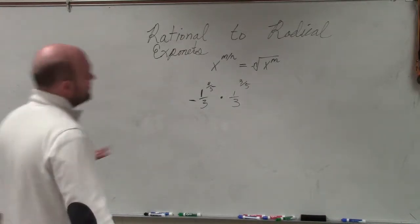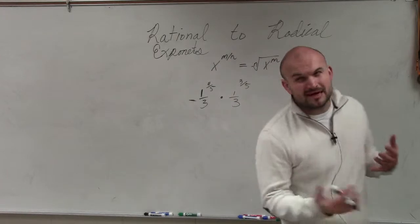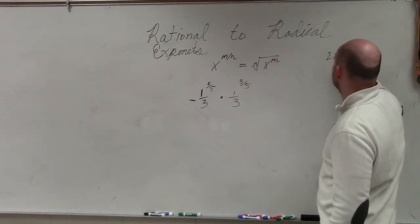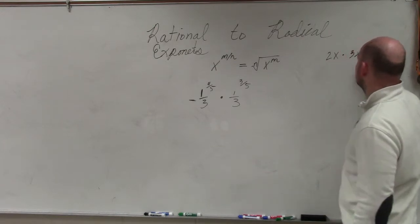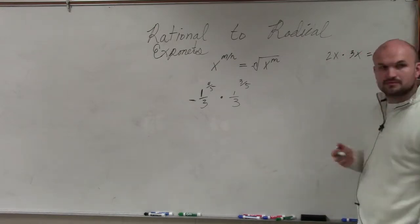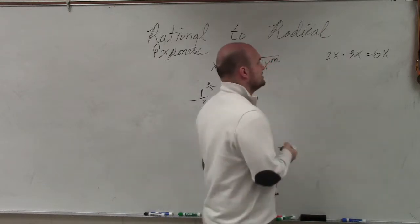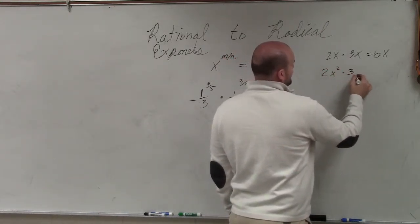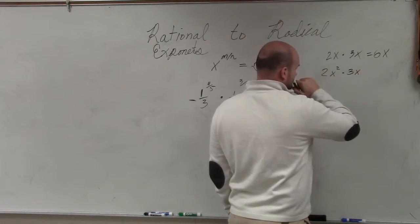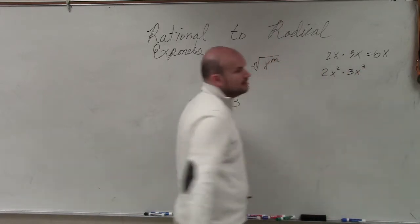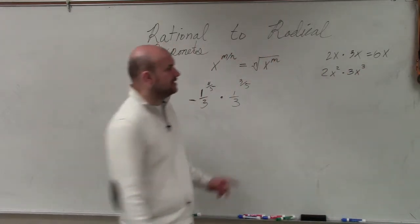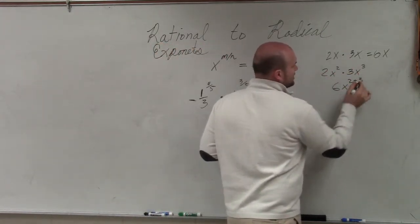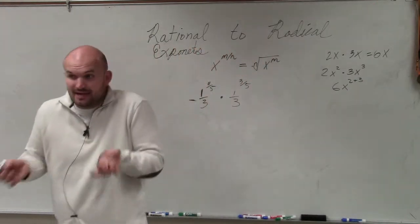Ladies and gentlemen, there are a couple things we need to know to do a problem like this. I'm going to work on some variables. If you guys remember, if we have 2x times 3x, that becomes 6x. In the same respect, if I have 2x squared times 3x cubed, all we do is multiply 2 times 3, which gives us 6. And then we do x squared plus 3. As long as the bases are the same, we can add the powers.